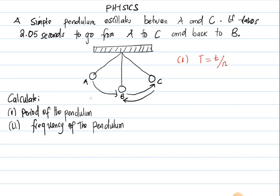When a pendulum moves from A to C, it makes half oscillation. But any movement between A and B or B and C is quarter. What is quarter plus quarter? Half.